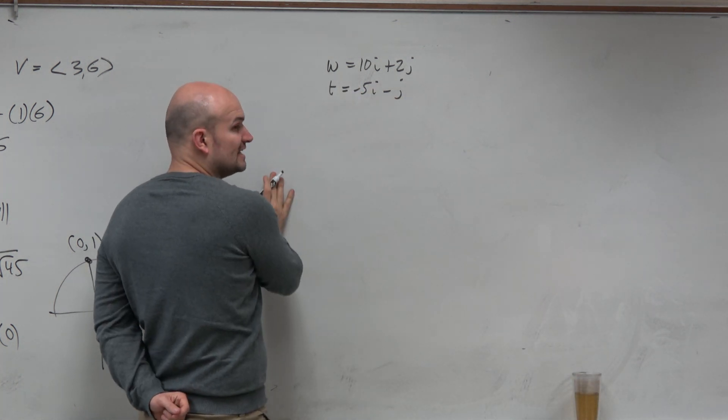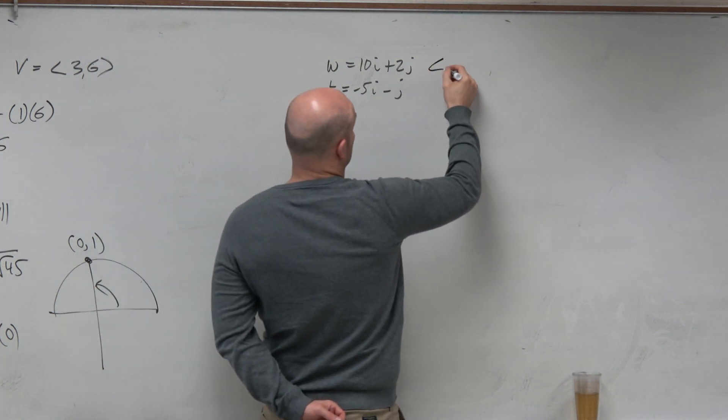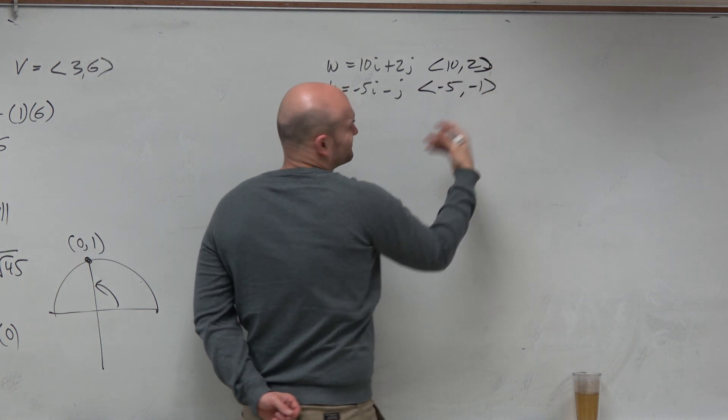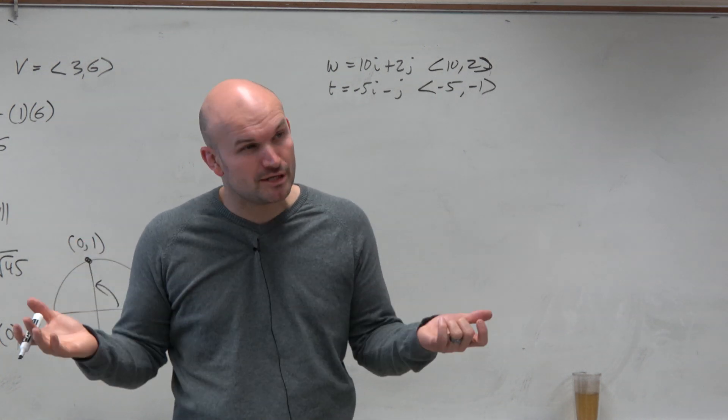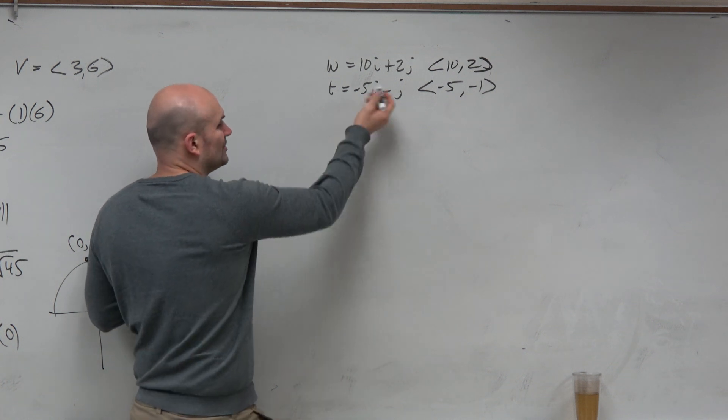So this one, we have two vectors as a linear combination. If we don't like linear combination, could we write them in component form? Sure. Actually, if you don't like i and j that much and you really want to put them in component form, then do it. They're interchangeable. Doesn't matter. But hopefully you guys just recognize you don't need to do that.